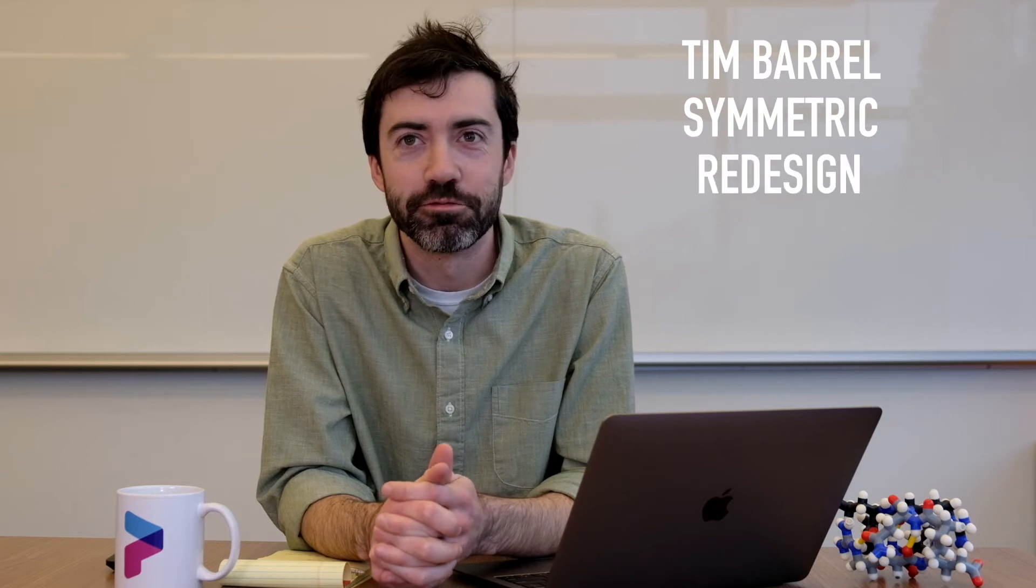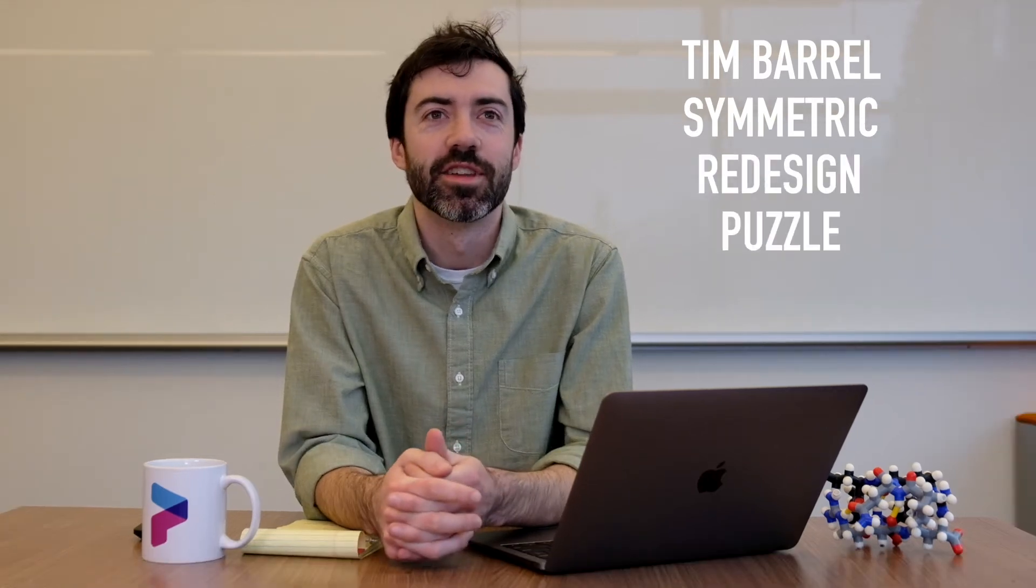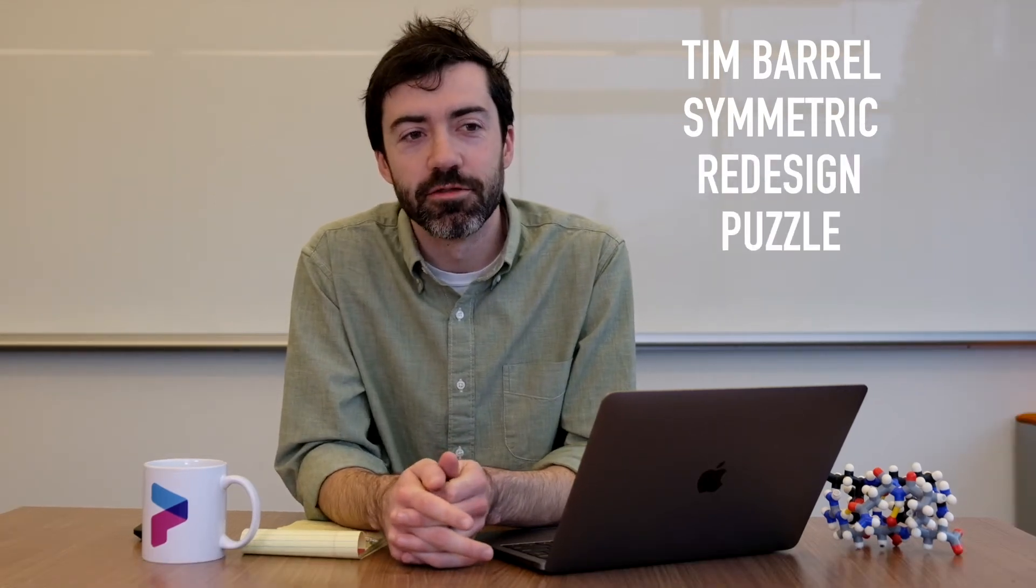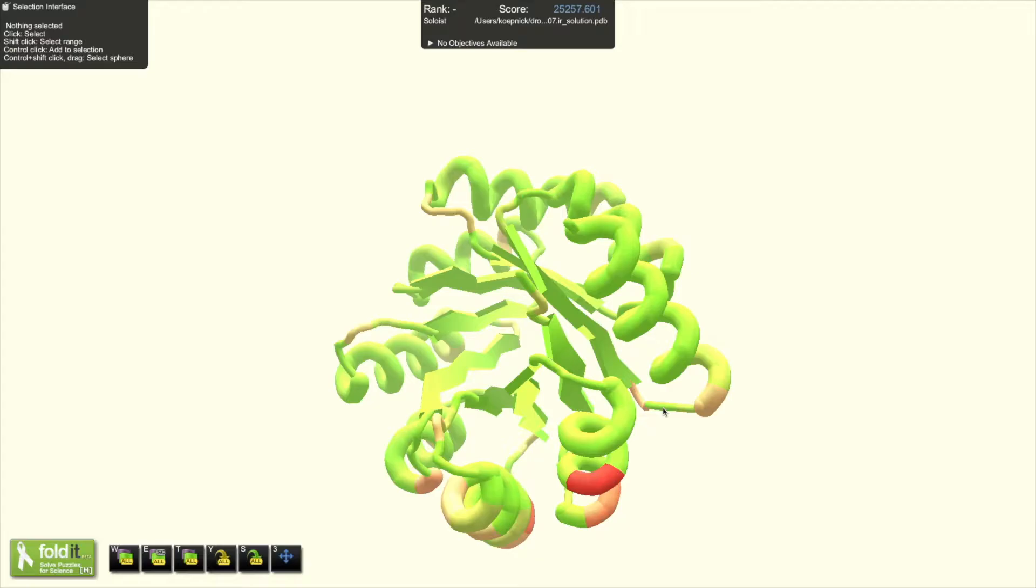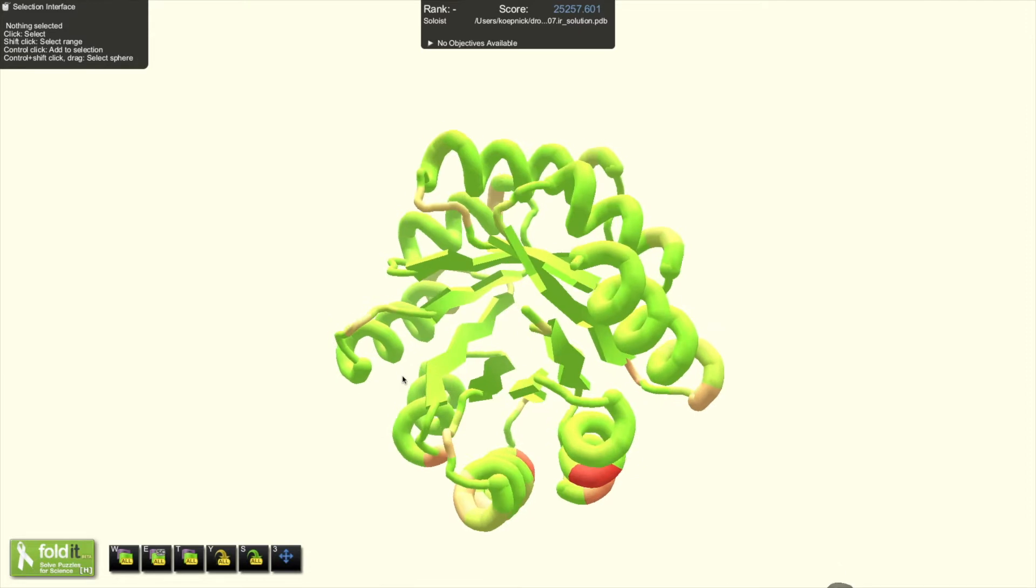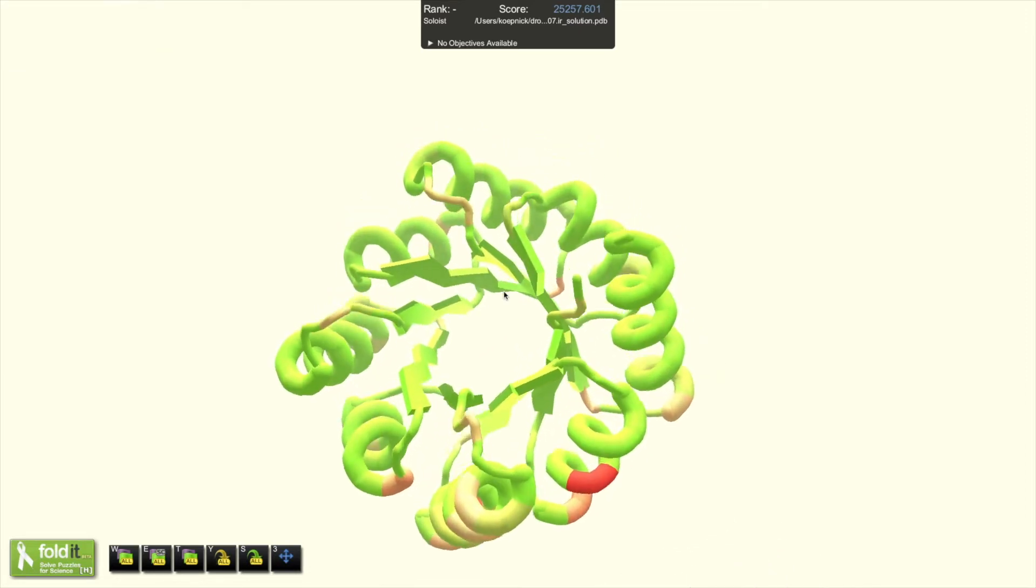Next, we had an outlier puzzle. We had a Tim Barrel symmetric redesign puzzle. This was unusual in that we provided to Foldit players a baker lab design of an already folded protein that behaves well as a monomer in solution. So it's very stable and folds up as designed.